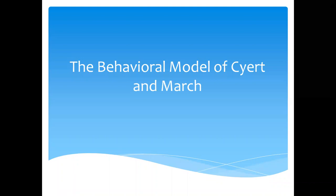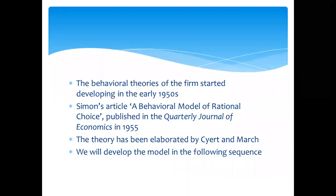Dear friends, in this video I am going to discuss the behavioural model of Cyert and March. The behavioural theories of the firm started developing in the early 1950s. Simon's article titled 'A Behavioural Model of Rational Choice,' published in the Quarterly Journal of Economics in 1955, made an impact on the theories of the firm which were existing in those days. This model was elaborated later on by two major economists, Cyert and March.